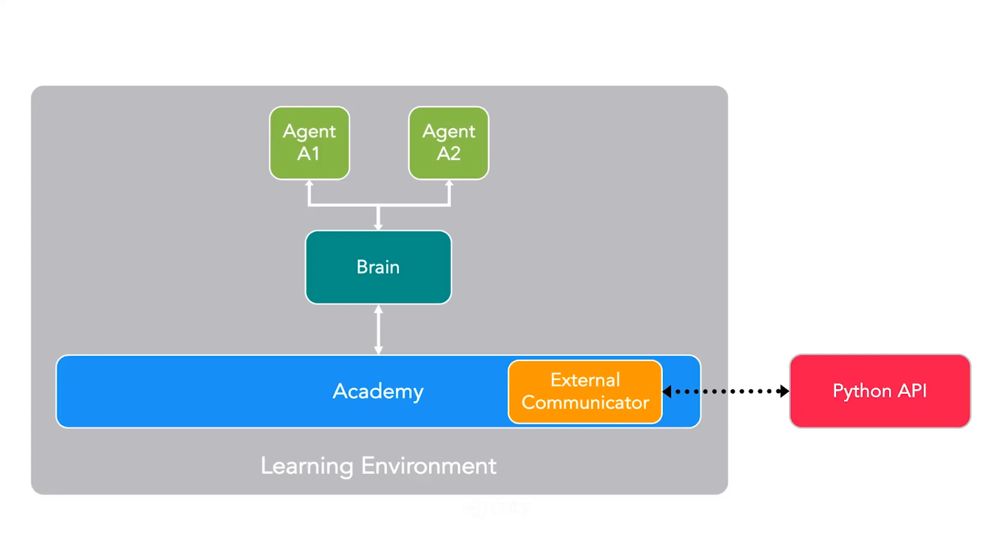At the lowest level, the academy is what allows everything to work together. And it's what allows Unity to communicate with outside training frameworks, like TensorFlow, using our Python API.